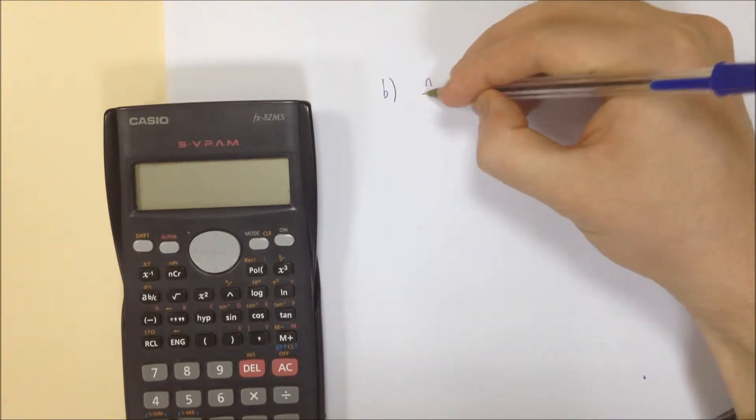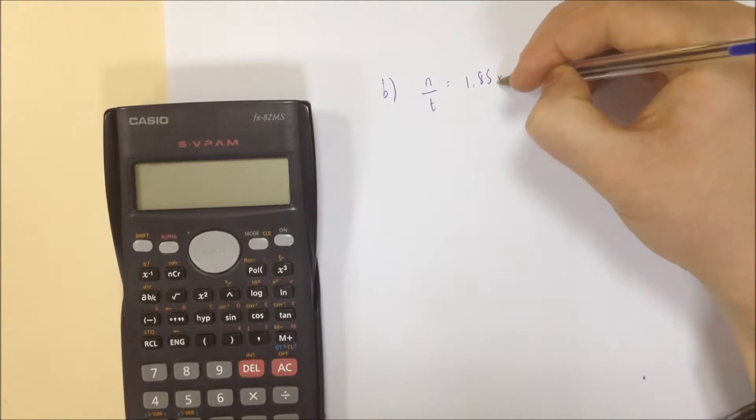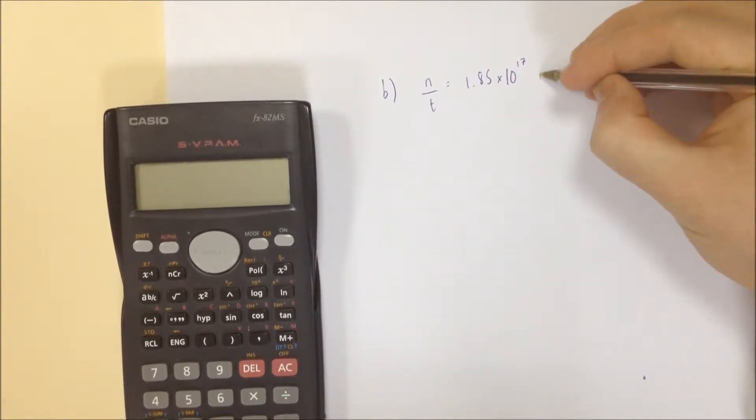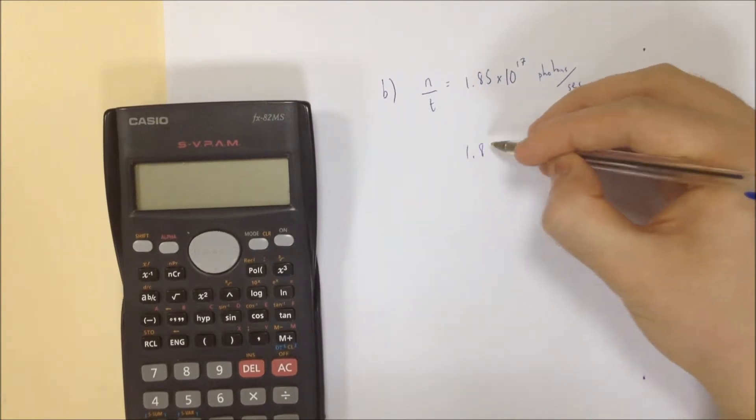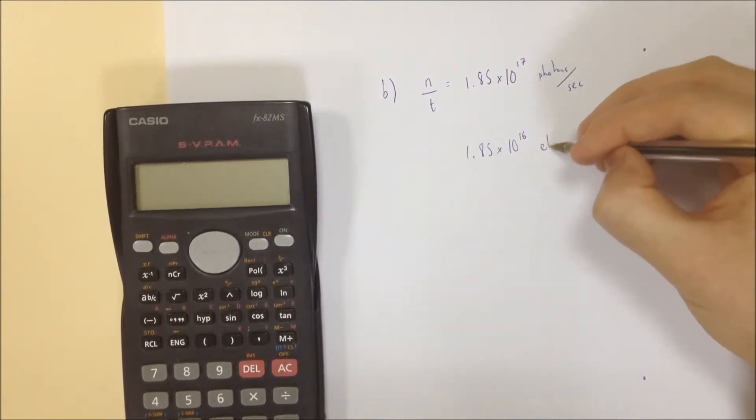Well, we know that the number of electrons per second equals 1.85 times 10 to the 17 photons per second. The number of electrons is 10% of that. So 10% of this number is divided by 10. So 1.85 times 10 to the 16 electrons per second.